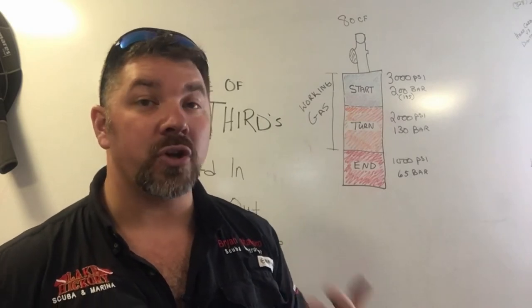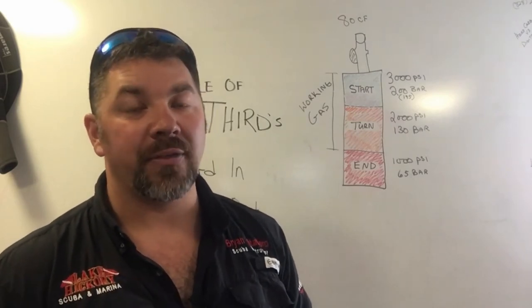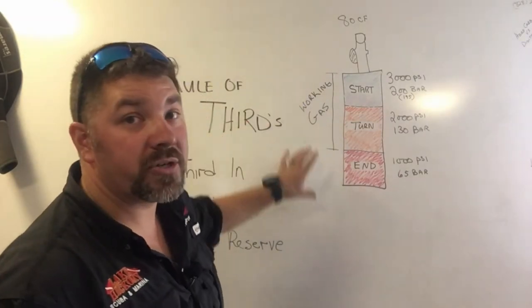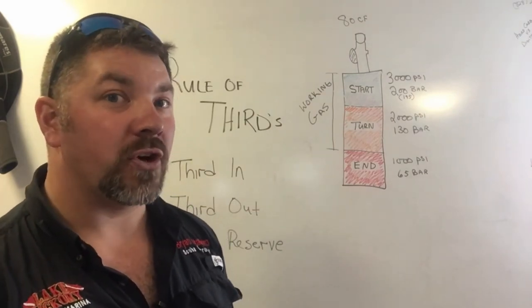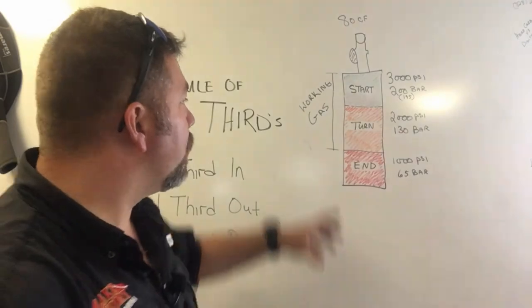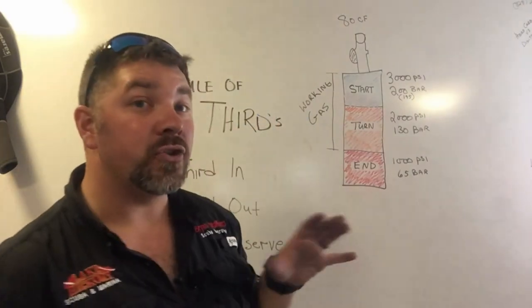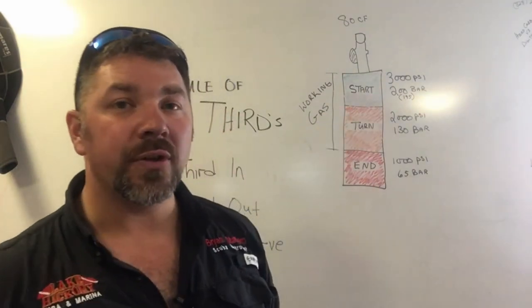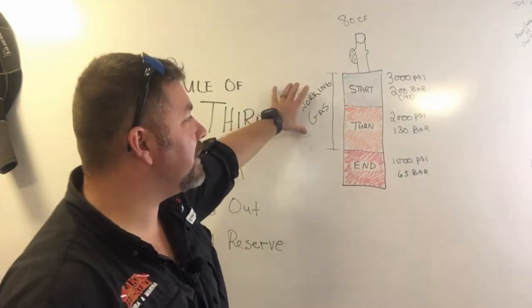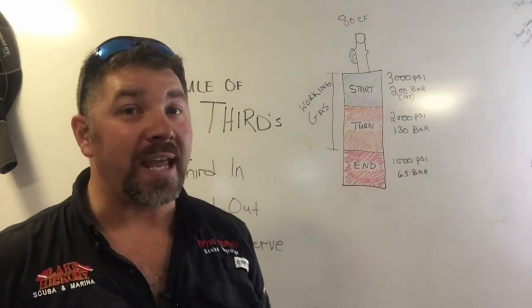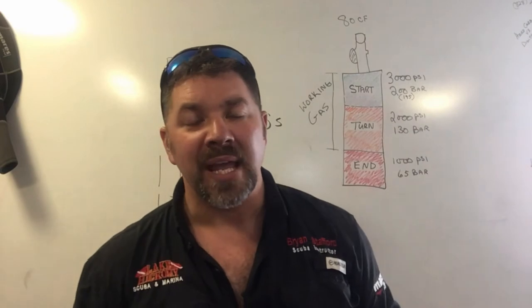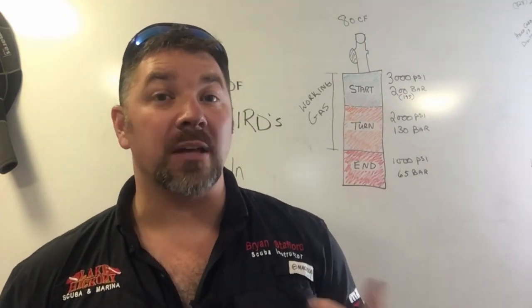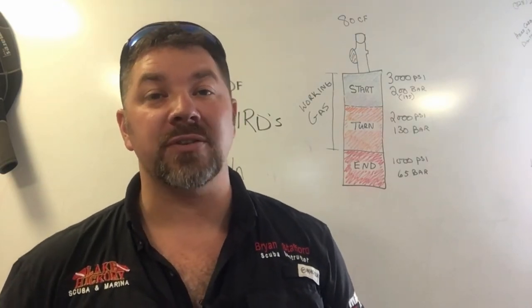I use the term working pressure, so it's important to understand what working pressure and ending pressure mean. Ending pressure is that reserve — what's left over in case of an emergency. Working pressure is always the two-thirds of your total pressure. With a 3,000 psi cylinder, two-thirds is 2,000 psi. When planning a dive, you only have that 2,000 psi to actually make the dive on. Based on your SAC rate and RMV rate, you may need to take a larger cylinder or extra cylinders to be safe.